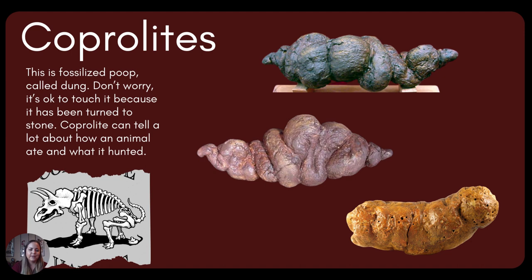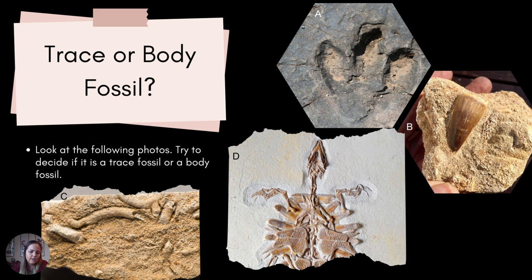Coprolites are fossilized poop that everybody thinks is really funny. Just like with anything, they can be completely replaced by sediment, so you're not necessarily holding poop when you hold one — although it still often looks like it. This can tell you something about the animal's diet, what it ate. That can be really important when trying to figure out hierarchies — knowing whether the T-Rex was a scavenger, or whether animals were herbivores or carnivores. Their coprolites tell us a lot about how they lived.